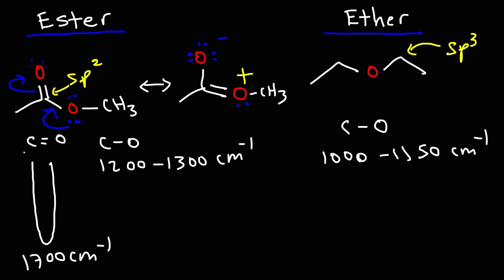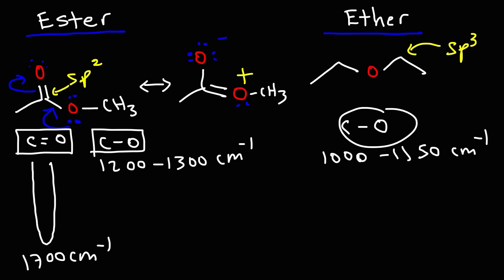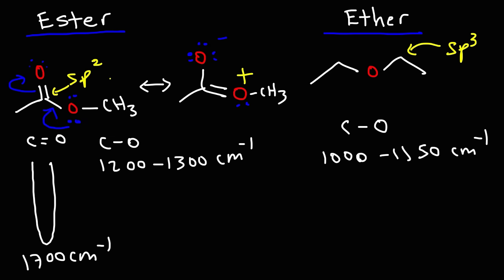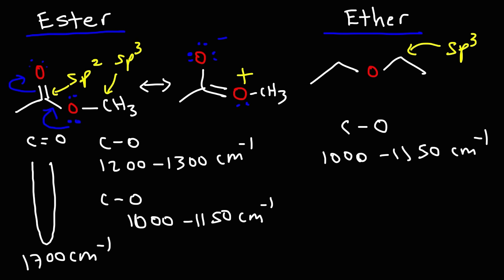A double bond CO stretch has a higher wavenumber than a single bond CO stretch, so a CO stretch with more double bond character will have a higher wavenumber. The ester has both an sp2 CO stretch and an sp3 CO stretch, while the ether only has the sp3 CO stretch. That's how you distinguish between an ester and an ether — the carbonyl functional group alone is enough, but also the presence of the sp2 versus sp3 CO stretch.